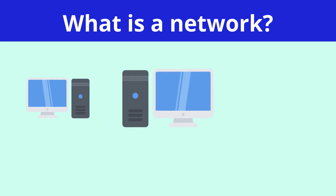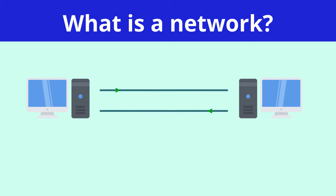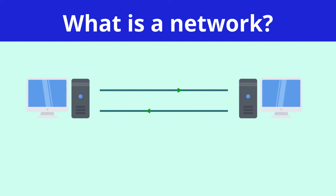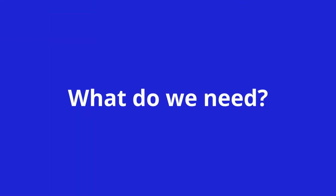A computer or device that is connected to other devices is called networked. The connections between the devices are called links. A network is a system of links that connect computers together and allow them to communicate.